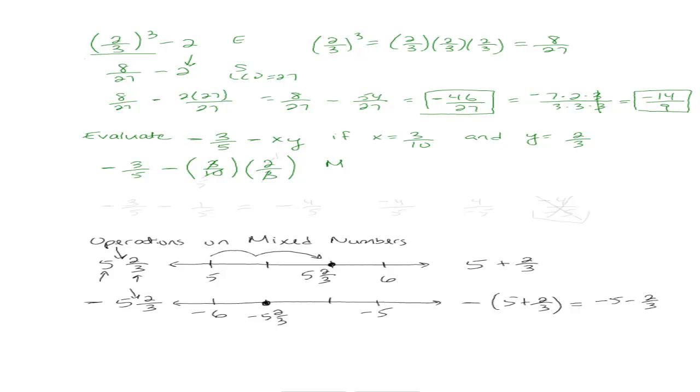I want to multiply these two. I can multiply and then reduce or I can reduce before I multiply. I'm going to do it before. So these 3's cancel out and the 2 goes into 10 five times. So this becomes negative 3 fifths minus 1 fifth.